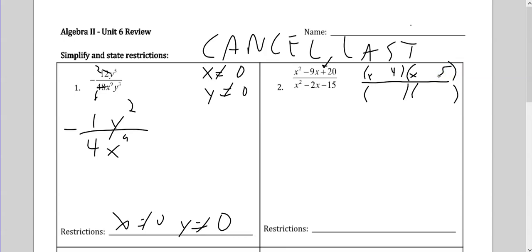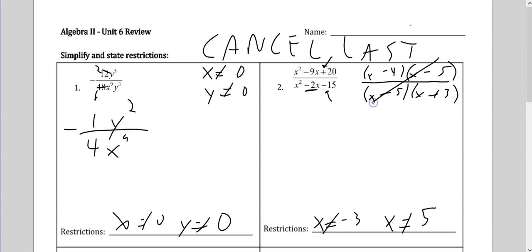Since this is positive, that means they're both positive or both negative. Since the 9 is negative, that means it's x minus 4, x minus 5. On the bottom, I need two numbers that multiply to give me 15 that differ by 2 — that's 5 and 3. Since I have more negatives left over, I want negative 5 and positive 3. Don't cancel yet. It's very common to cancel and go 'x plus 3 equals 0, x cannot be negative 3' and move on and be wrong. So you have to do the canceling last. x also cannot be 5. Now we can cancel and say our final answer is x minus 4 over x plus 3.